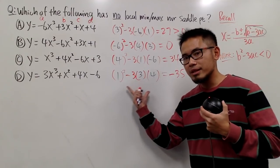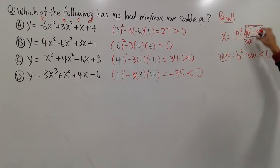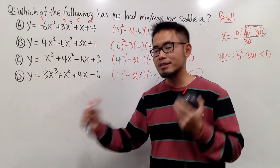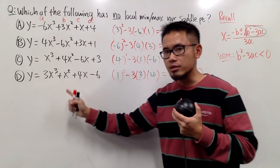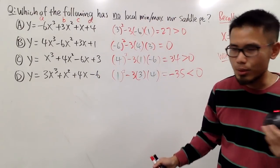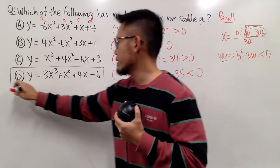1 minus 36 is negative 35, and this is less than 0. We calculated the discriminant is negative, and if you plug into here, this is not going to work out. So we wouldn't have any vertex at all. There's nothing interesting. This equation has no local minimum, no local maximum, no saddle point. But it is the answer to our question.